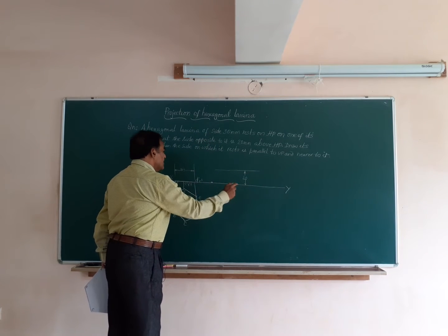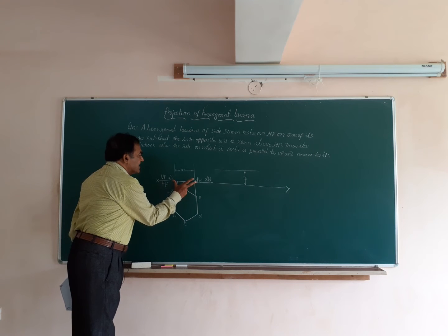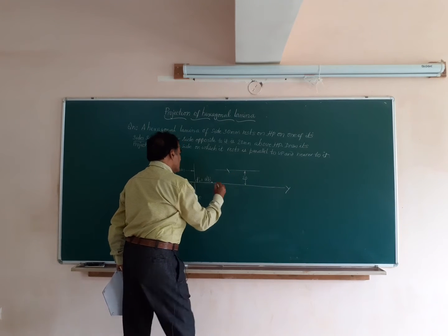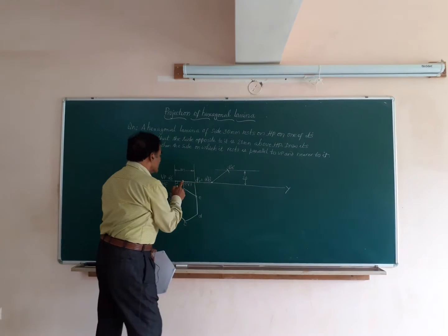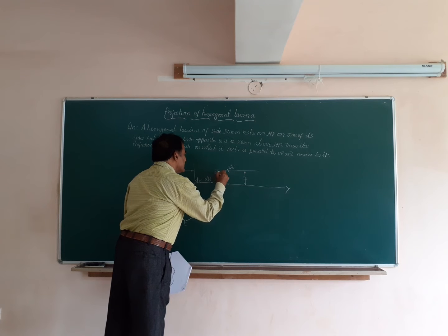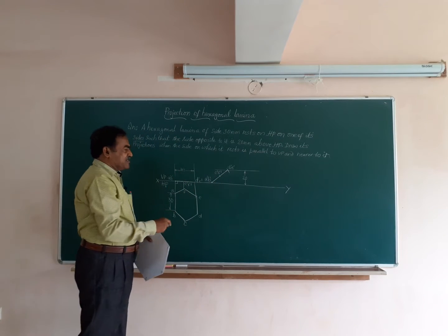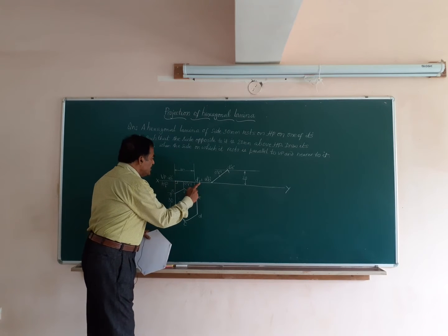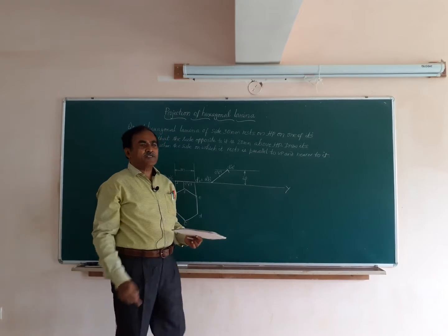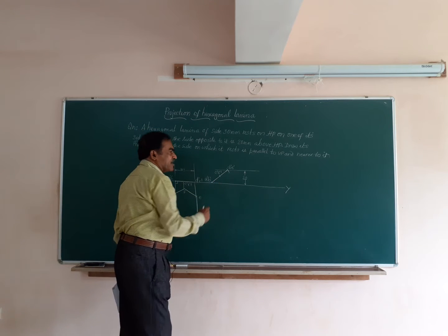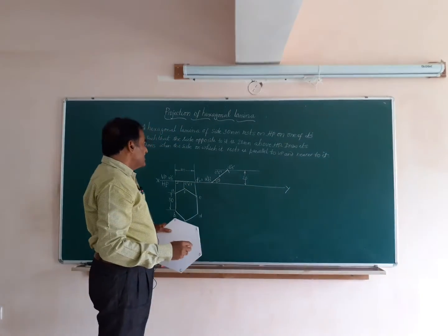Select some point at random on the XY line and mark it as A dash B dash. Taking A dash B dash as center and length M as radius, strike an arc. This arc gives the side D dash E dash, and exactly in the center you have C dash F dash. This redraws the front view such that side DE — opposite to the resting side — is 20 mm above HP. You can also find the inclination of the surface: this angle gives theta, the inclination of the lamina surface with HP.